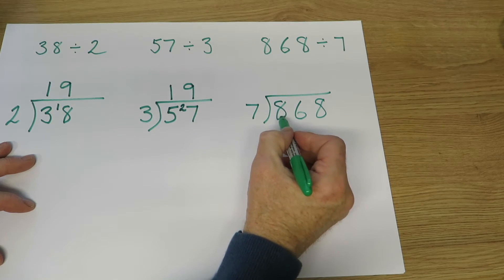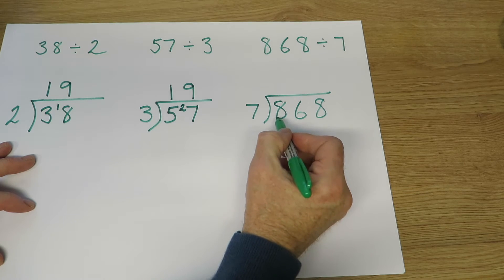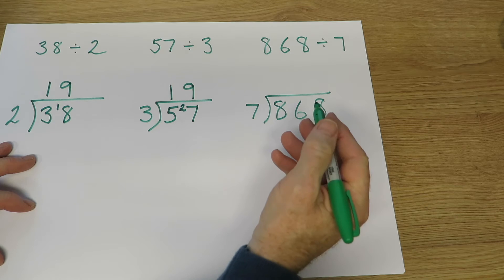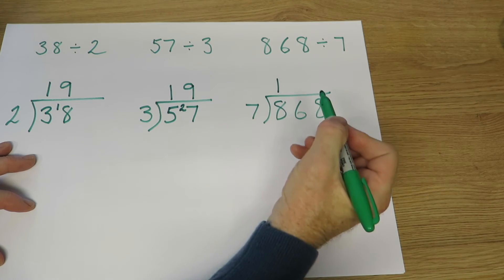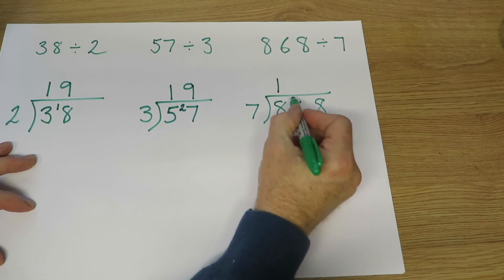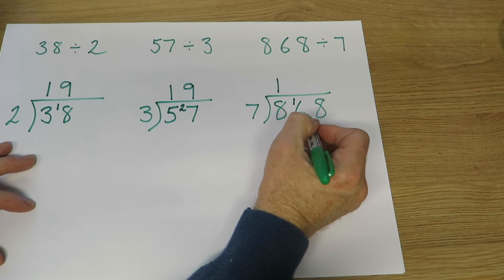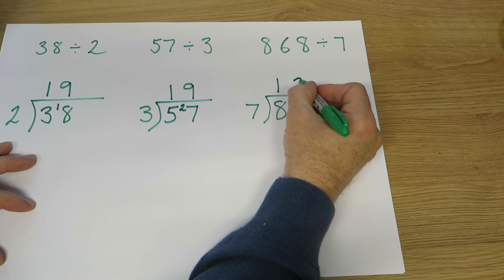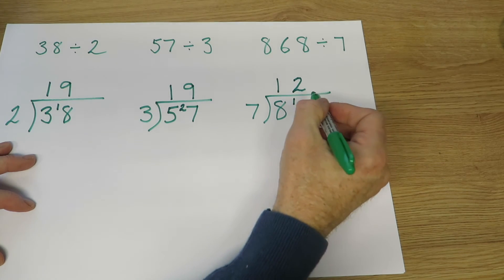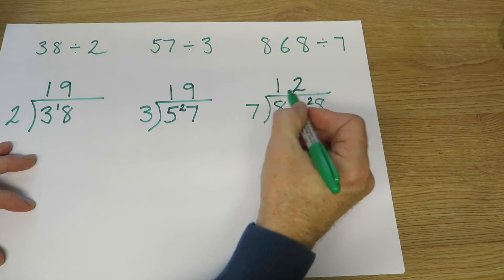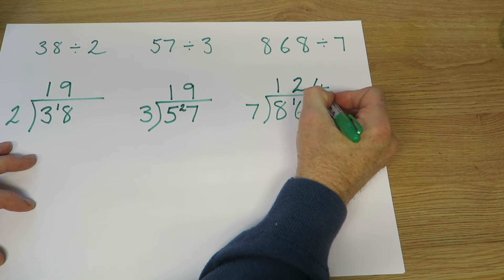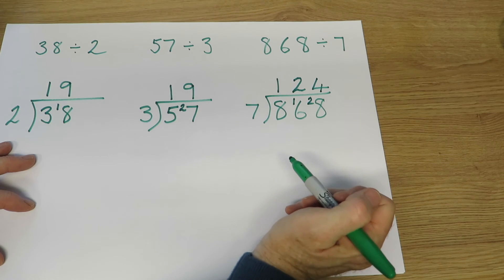This question, of course, says 868. So eight hundreds, six tens, eight units, divided by seven. But we say, how many sevens in eight? One. With one left over. So we've now got 16 here. That's 16 tens. But we say, how many sevens in 16? Two. Two sevens are 14. So we've got two left over. How many sevens in 28? Four. So the answer, 124.